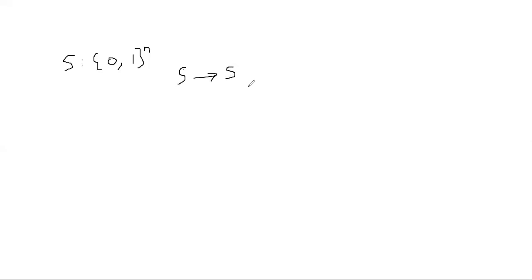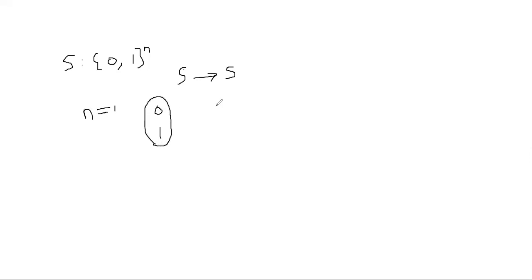I will make it simple first by making the size of n small — let's say n is one. That means I'm only allowed to have one-bit strings. The possible one-bit strings are 0 or 1, that's all. I'm going to visualize this graphically: I put 0 and 1, and I want to map them to 0 or 1. How many ways can I do that?